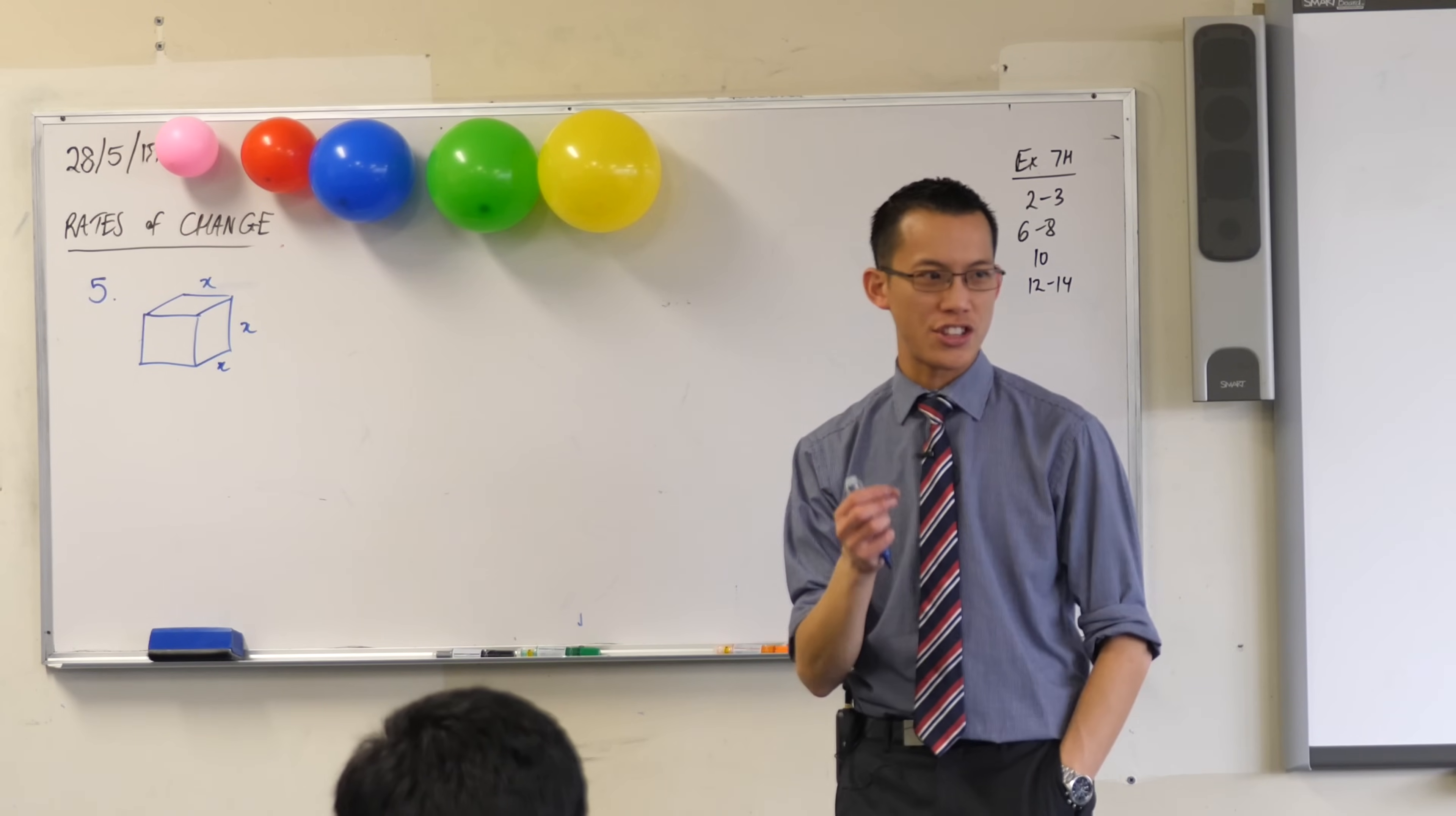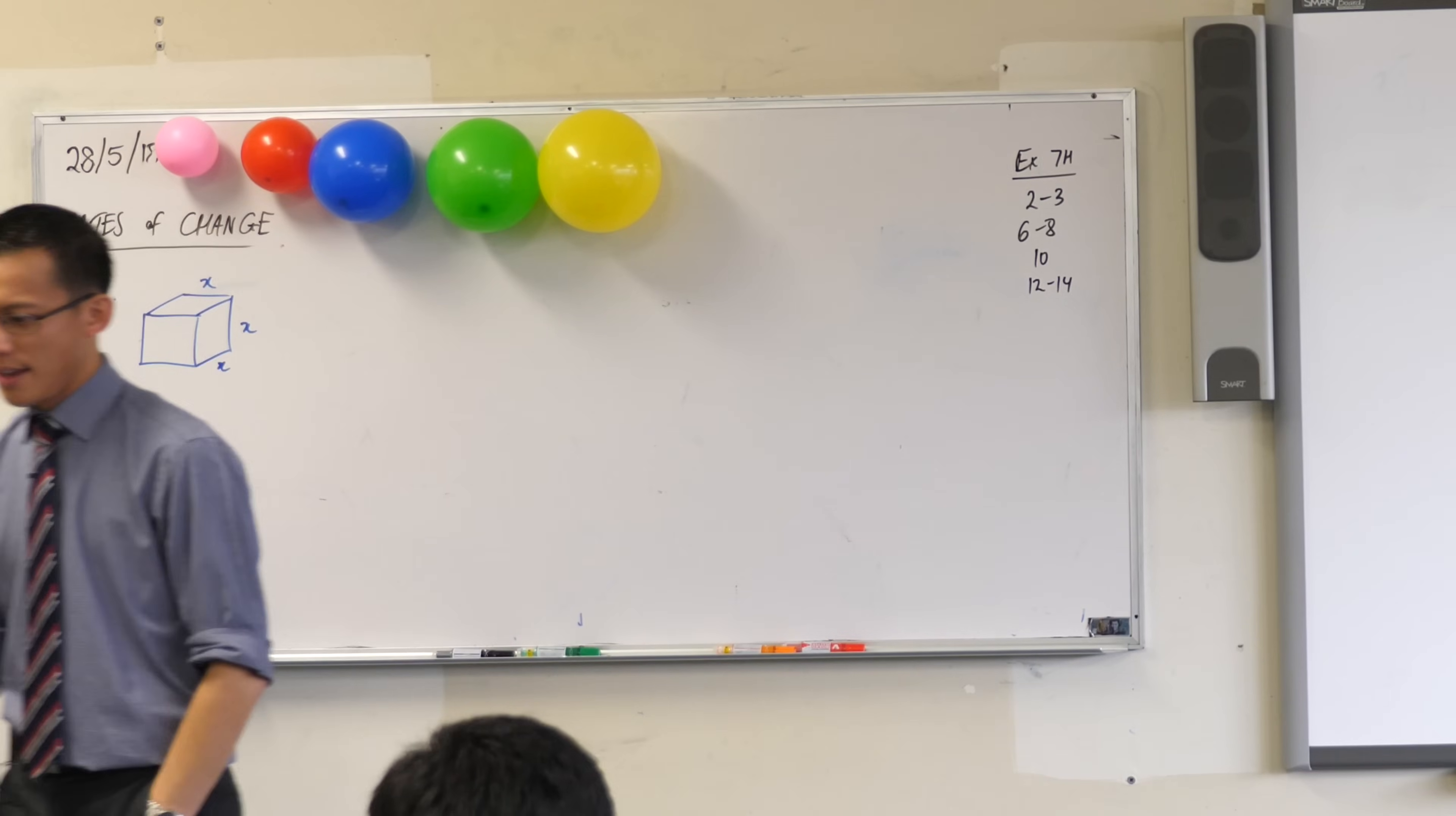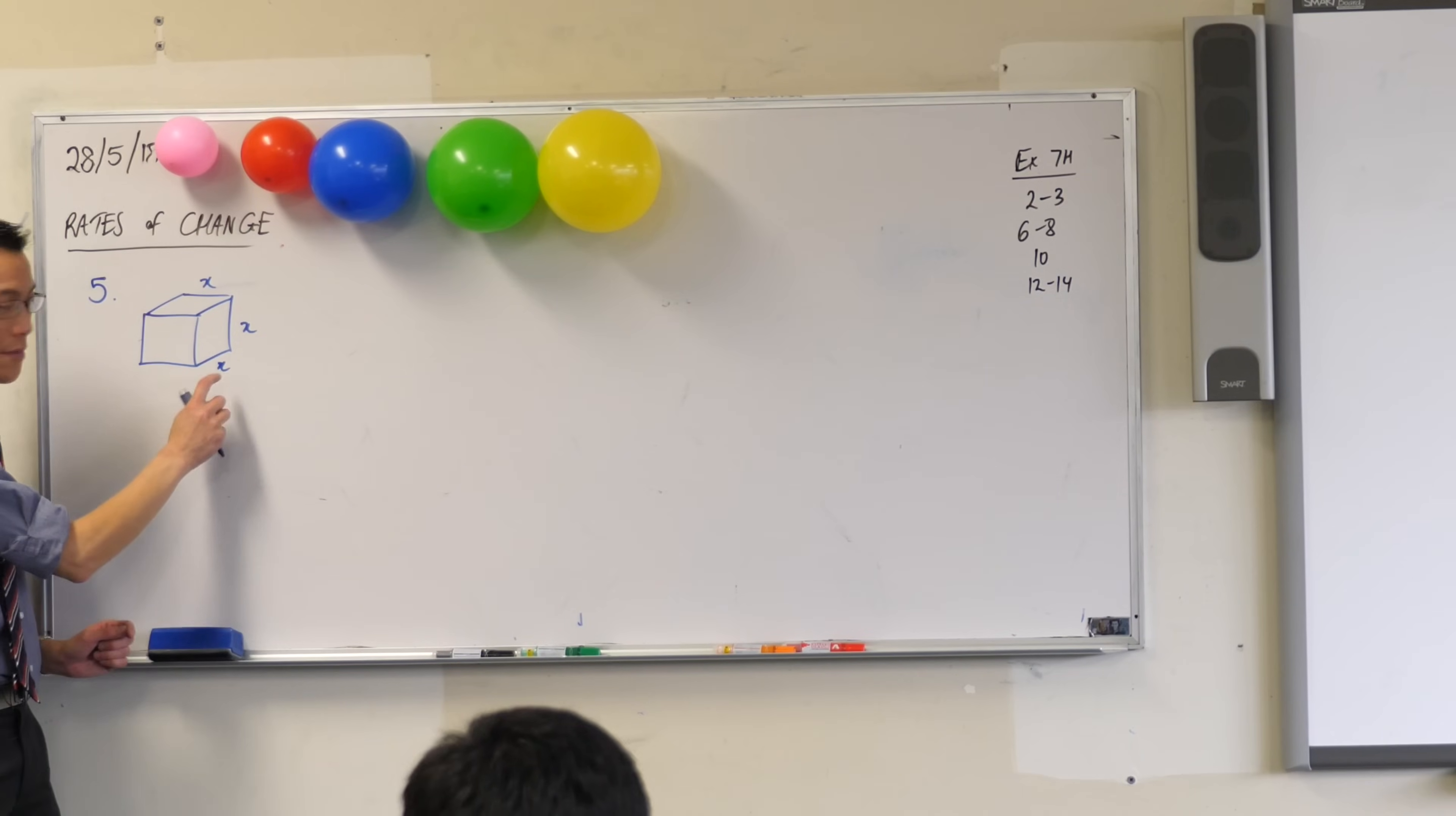What's the rate of change that they give you in that first sentence? The side length, this is important, the side length. So this is the side length, right? See that? It's decreasing, bless you, at a rate of five millimeters per minute. Okay? So here's what we're going to do.